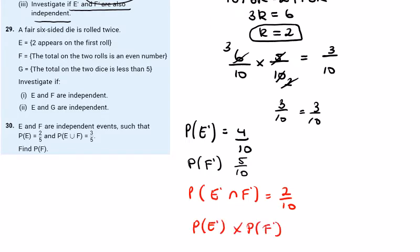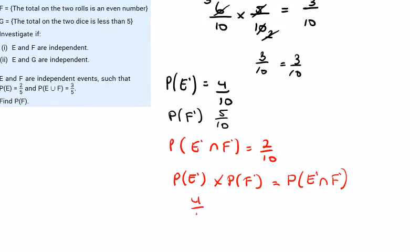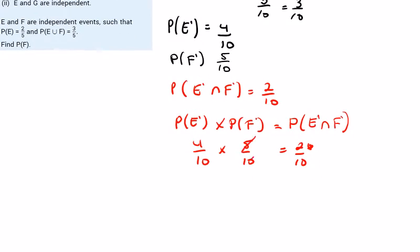To check independence of the complements: P(E') × P(F') must equal P(E' ∩ F'). We have (4/10) × (5/10) — does that equal 2/10? Simplifying: 5 goes into 10 twice and 2 goes into 4 twice, giving 2/10 = 2/10. Therefore E complement and F complement are also independent.